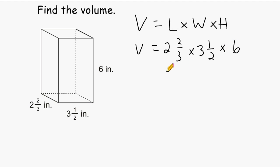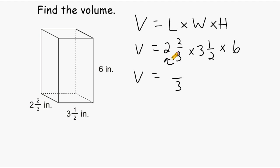Whenever you multiply mixed numbers together, you have to rename those as improper fractions. To do that, you take the denominator that's already there and just rewrite it. But to get the numerator, you have to multiply the denominator by the whole number — three times two is six — and then you add the numerator to that product, and six plus two is eight. So we renamed two and two-thirds as eight-thirds.